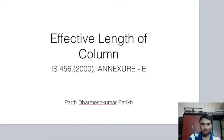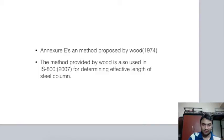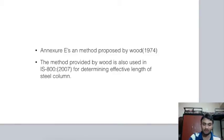Today we are going to see effective length of column and how we can calculate it from IS 456. In Annexure E, a method proposed by Wood in 1974 is given. This method is also used for steel sections and is given in IS 800 for effective length of steel columns and struts.